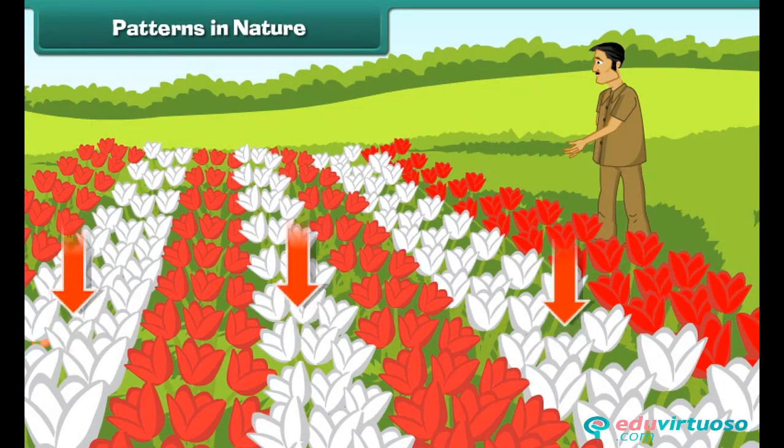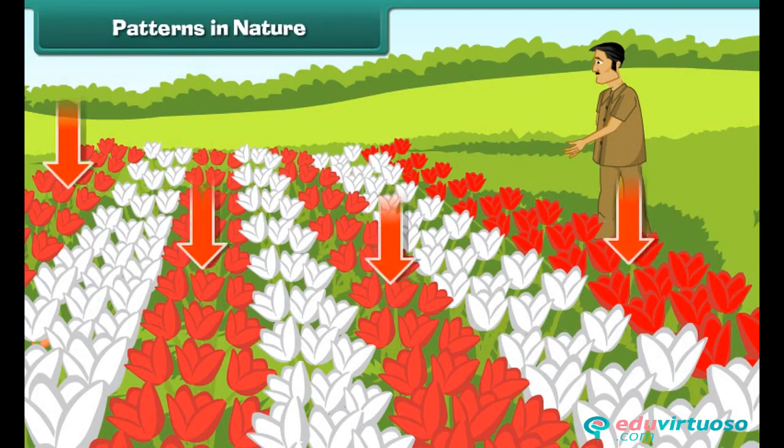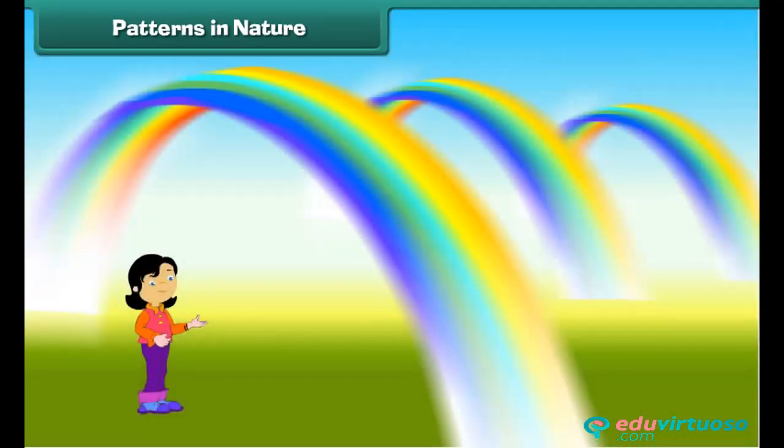Here, a white rose follows a pair of red roses. Look at rainbows. The order of colours in every rainbow is the same.